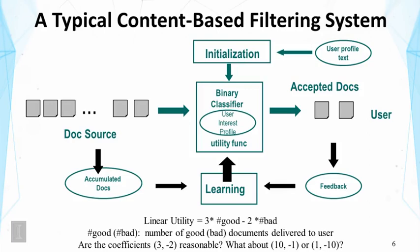Consider the two extremes: 10 and -1 versus 1 and -10. With a big reward for a good document and only a small penalty for a bad one, the system is encouraged to over-deliver — trying to deliver more in hope of a big award. On the other hand, with 1 and -10, the big loss for a bad document makes the system very conservative, requiring near certainty before delivering. The utility function must therefore be designed based on the specific application.